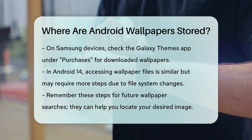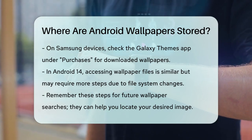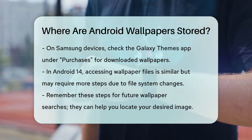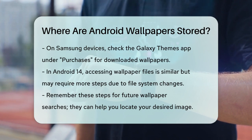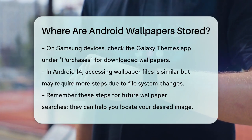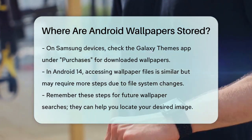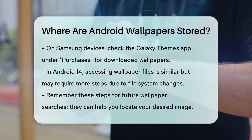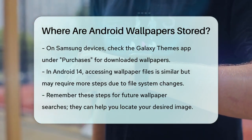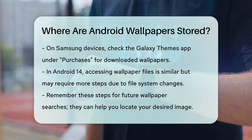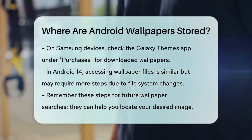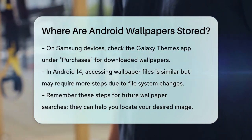In Android 14, the process remains similar, but you might need to dig a bit deeper due to changes in file system access. The principle of accessing the /data/system/0/wallpaper directory still applies, but you may need to use ADB or a rooted device to get to it. So the next time you're looking for that perfect wallpaper, remember where to find it — it's just a few technical steps away.